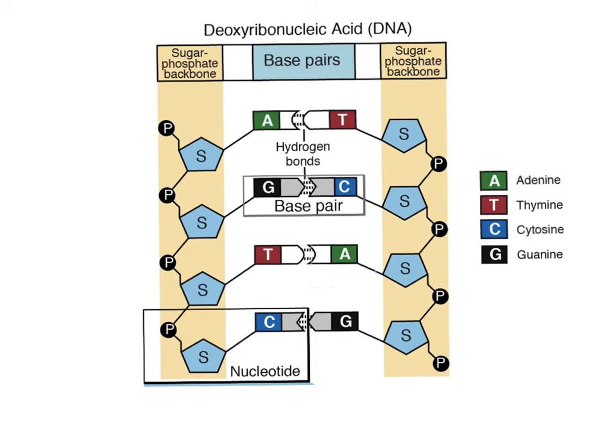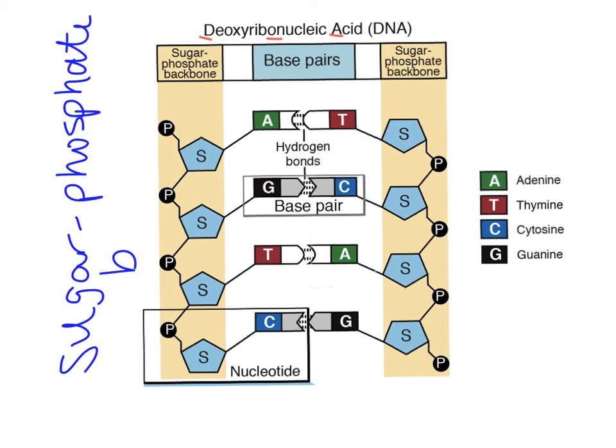Here's our overview of the structure of DNA, right? DNA, deoxyribonucleic acid, is made up of nucleotides that all fit together. And so we have the sugar phosphate backbone, which we can see here. It makes up things like the handrails or the sides of the ladder.